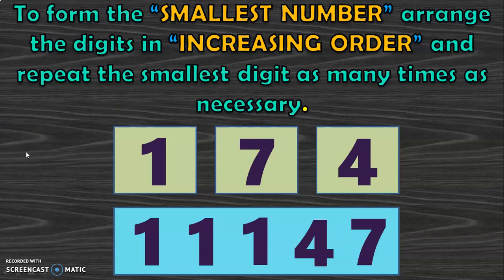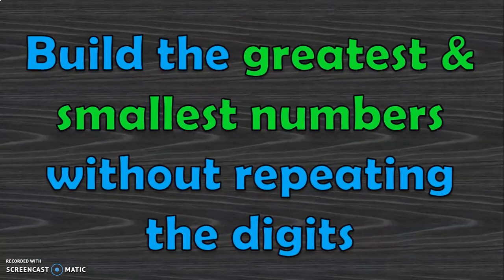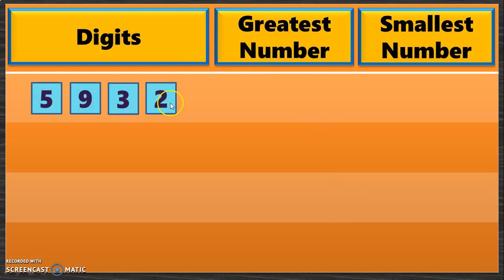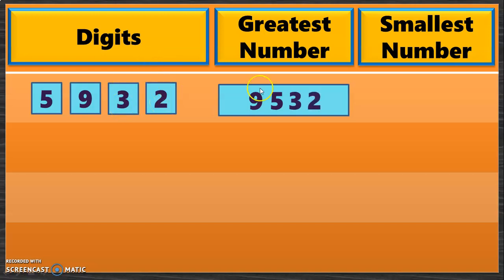Hope you have clearly understood the rules for creating the smallest and biggest numbers both without repeating and with repeating the digits. The same rule applies for 6-digit numbers. Let us now do some exercises. I am giving a 4-digit number for quick revision. To build the greatest 4-digit number, arrange from big to small: 9, 5, 3, 2 — giving 9532.